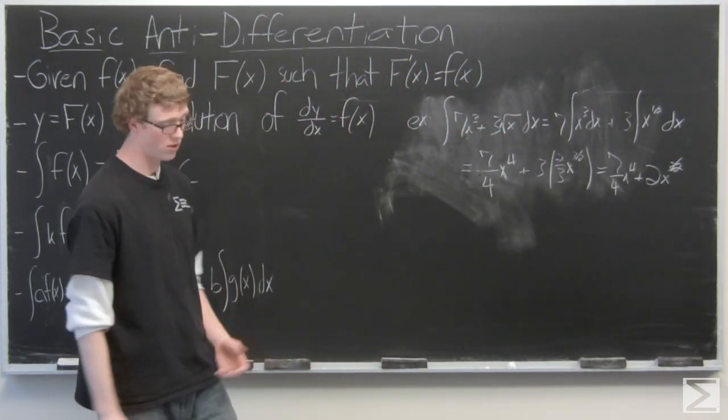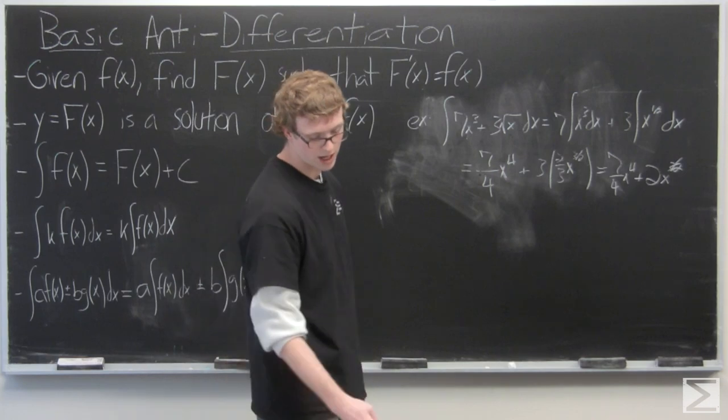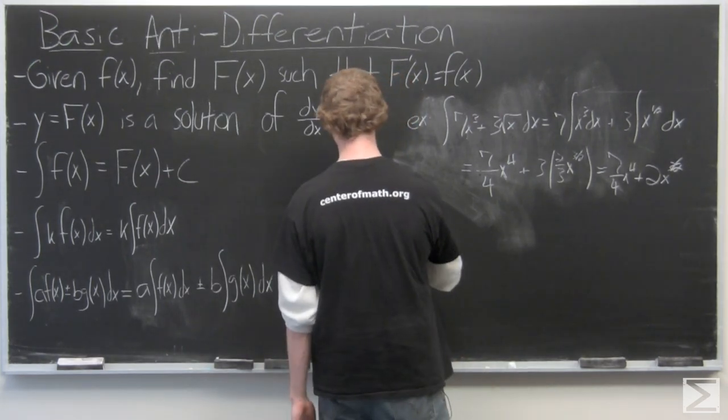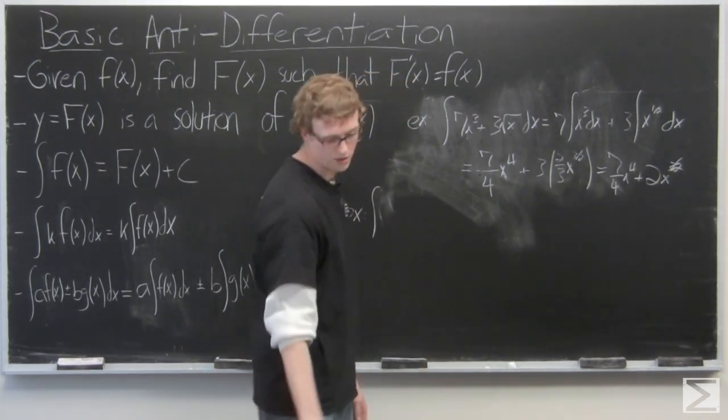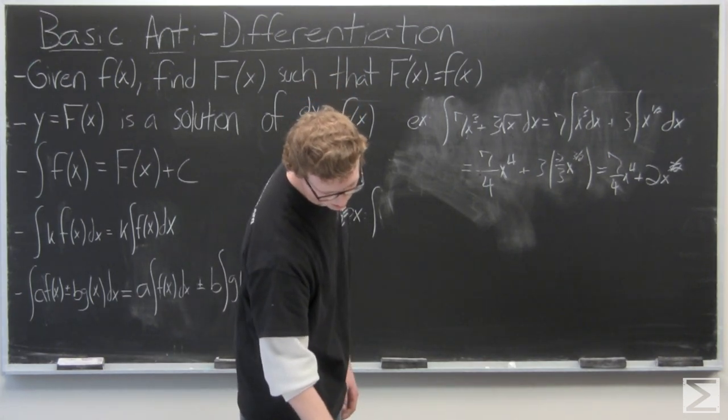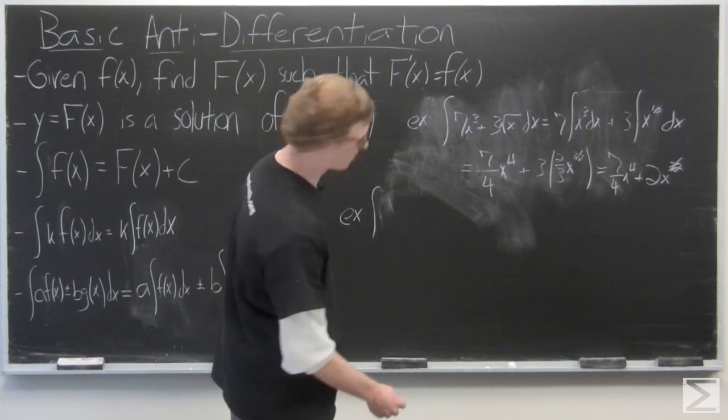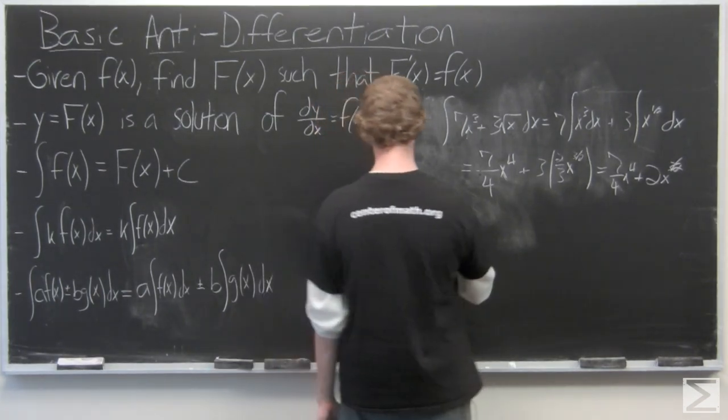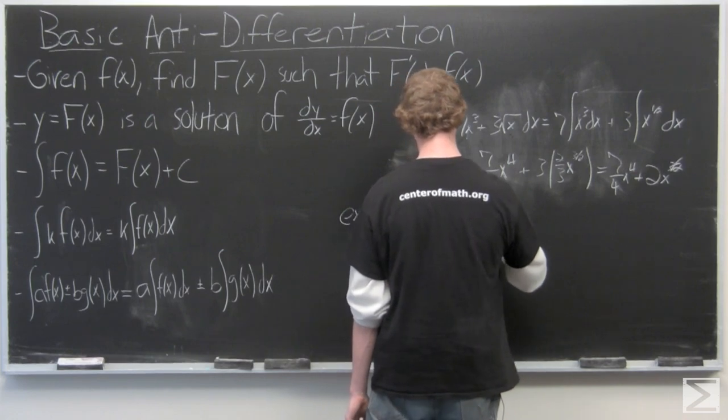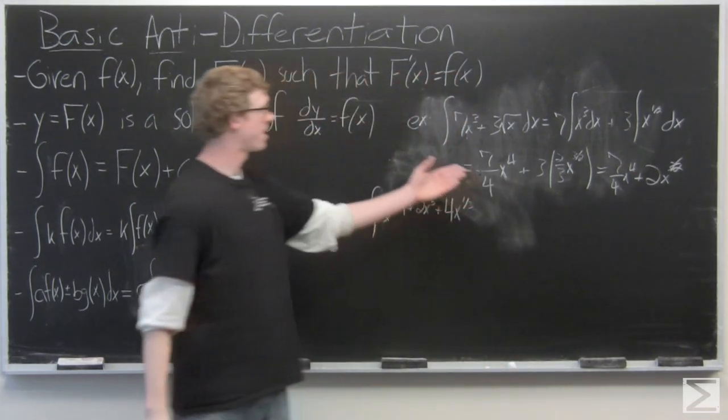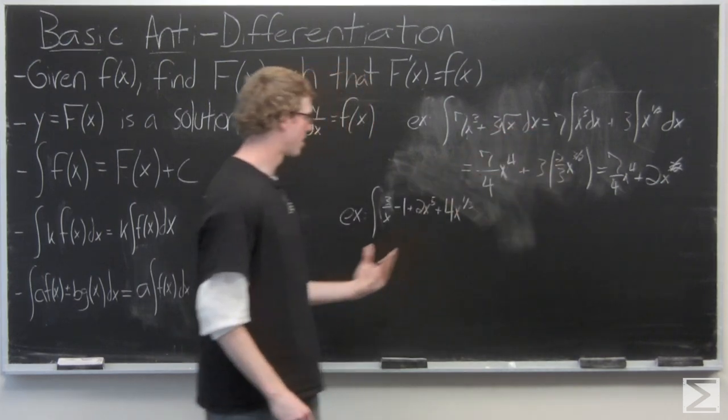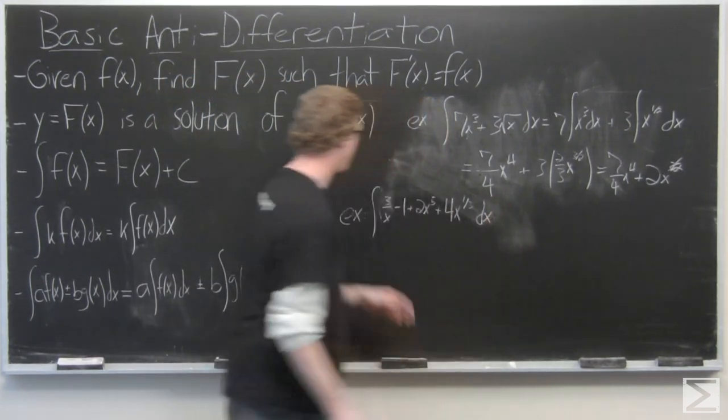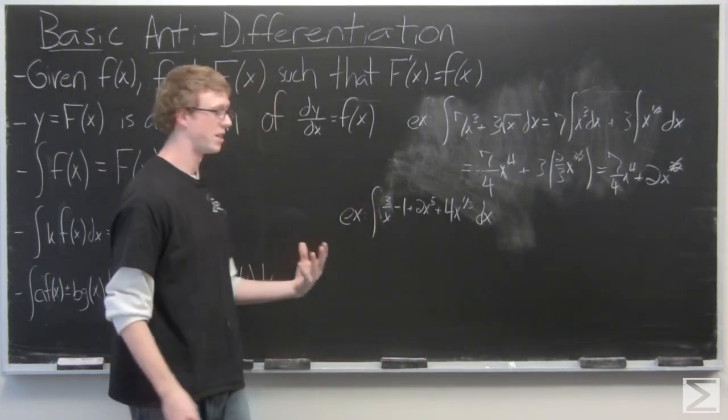We're going to take a look at one more example. This time we're going to have a x^(-1) so we can see how that might be dealt with especially when it's multiplied by a constant. This integral is 3/x minus 1 plus 2x^5 plus 4 cube roots of x. Instead of breaking this up into separate integrals, I'm just going to calculate it all as one, but know that this could be broken up into four separate integrals, one for each term, and then it could calculate it out that way.